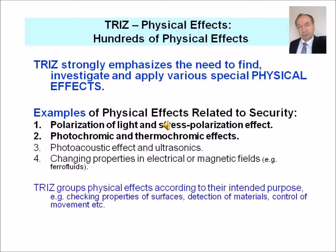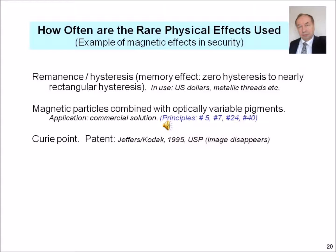TRIZ strongly emphasizes the need to investigate various physical effects which could potentially be used in your invention. A comprehensive list of such effects is included in the workbook. TRIZ groups physical effects according to their intended purpose — for example, checking properties of surfaces, detection of materials, control of movement, etc. Rare physical effects are not so rare when it comes to inventions. A field-specific example is the use of magnetic effects in security marks, including magnetic remnants and a combination of magnetic particles with optically variable pigments.